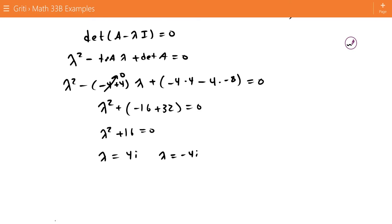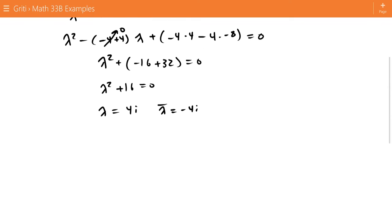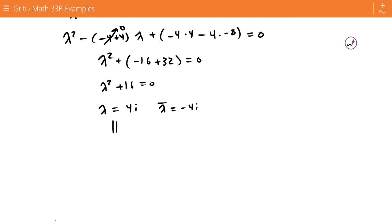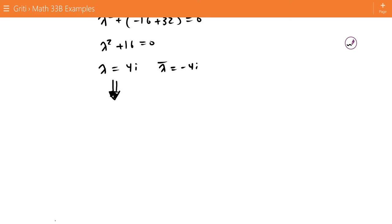This lambda is just a complex conjugate of our first lambda, so we just need to consider this lambda, and we'll get a fundamental solution, or two solutions, out of that. So this is going to have a complex eigenvector W.